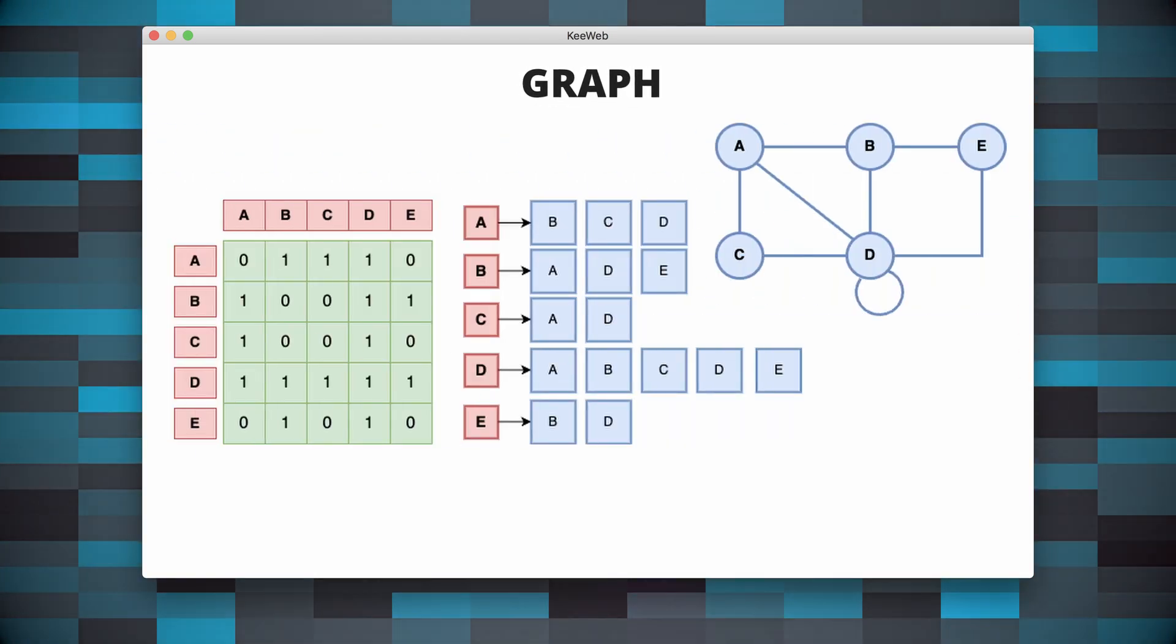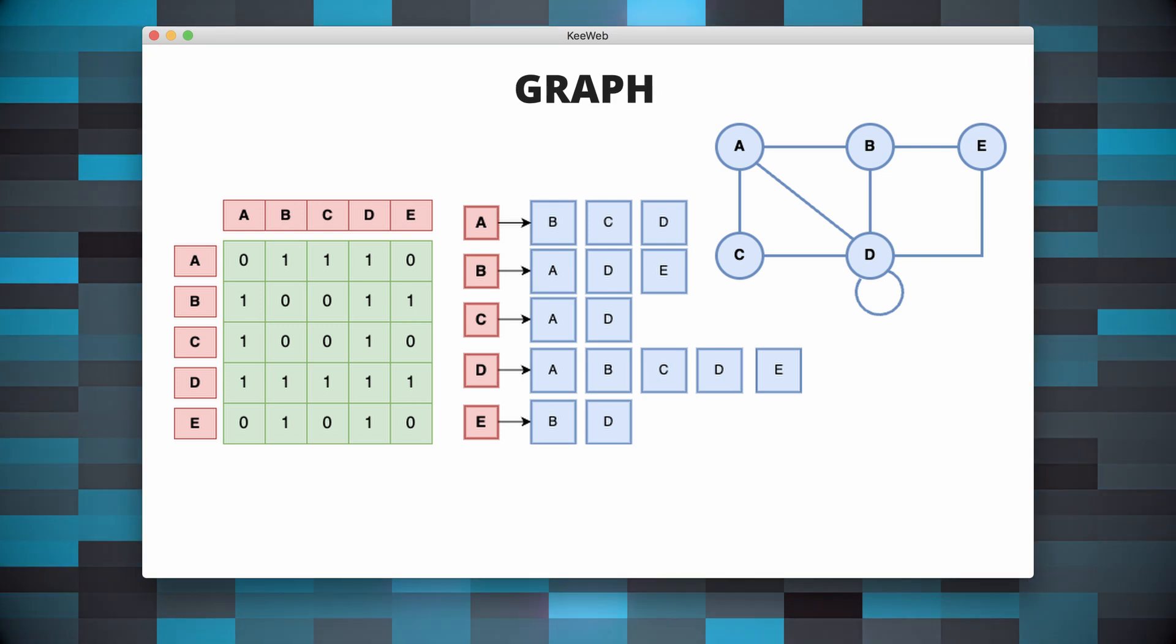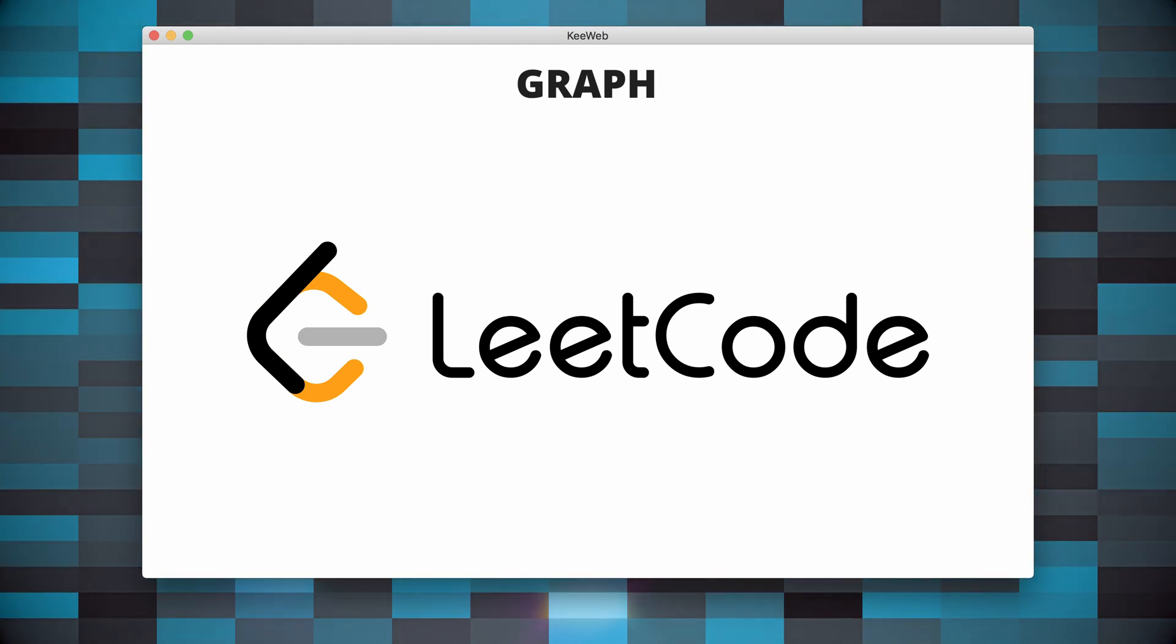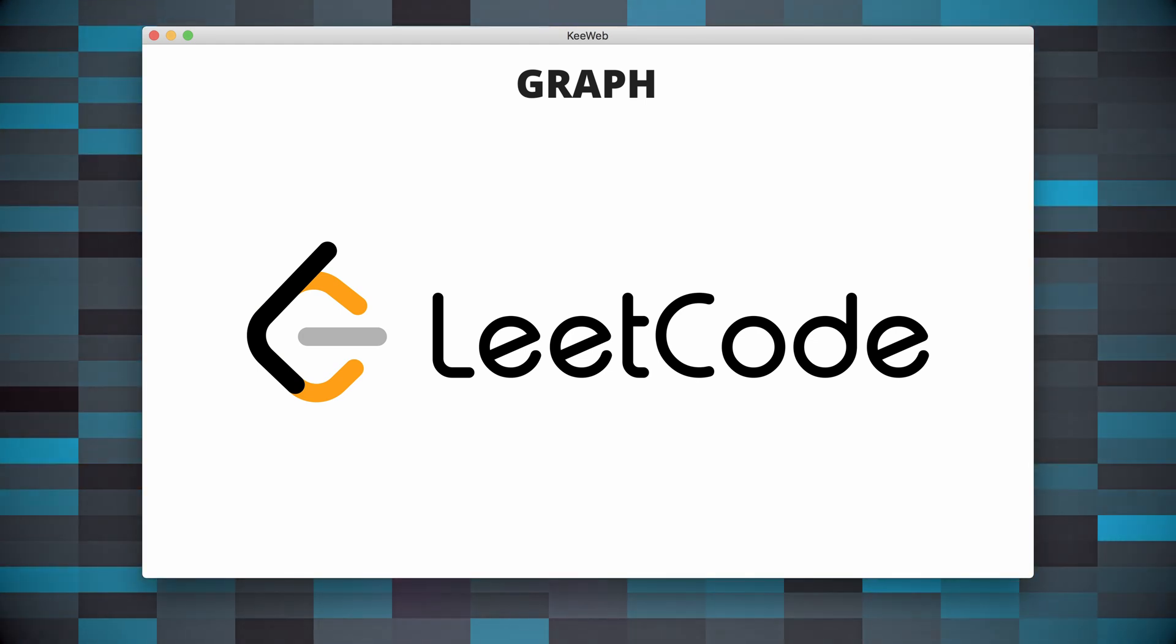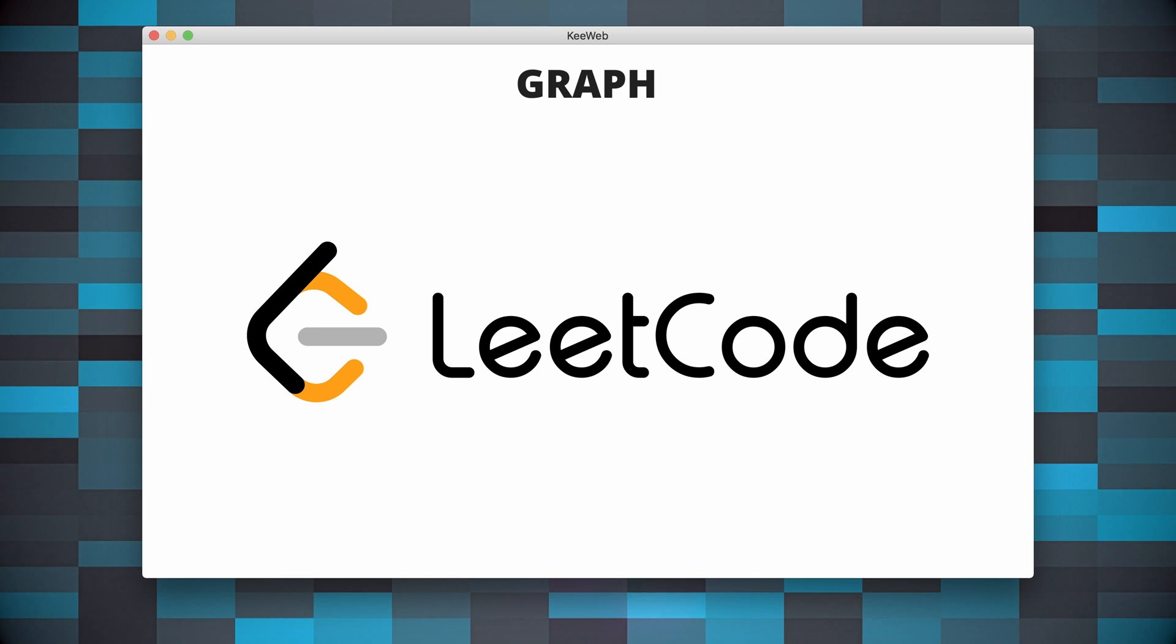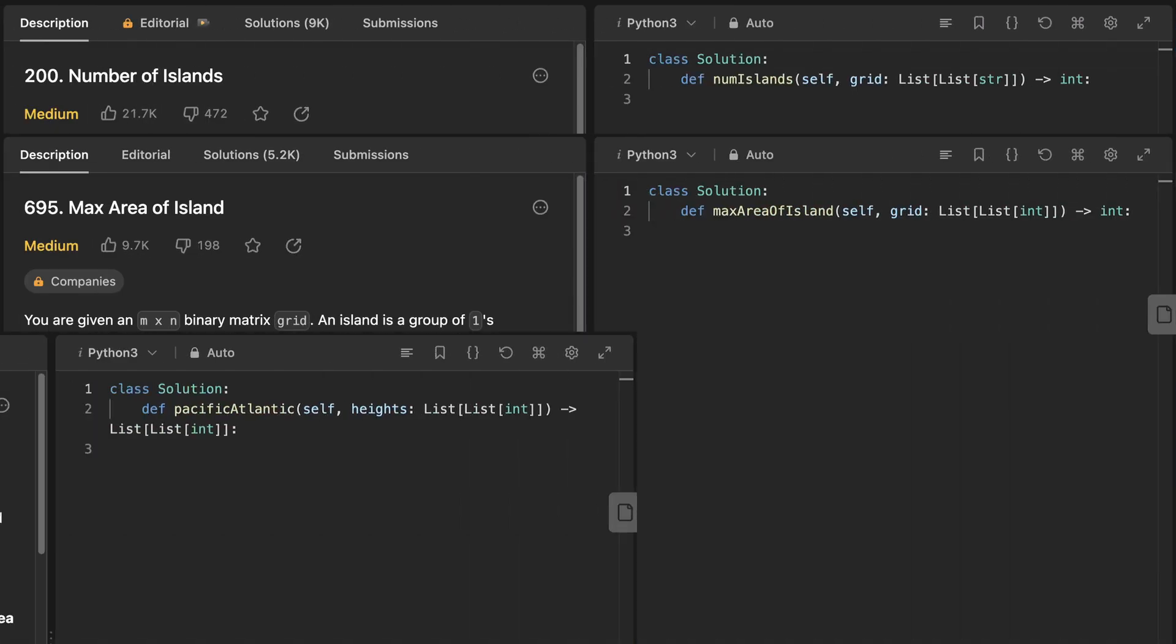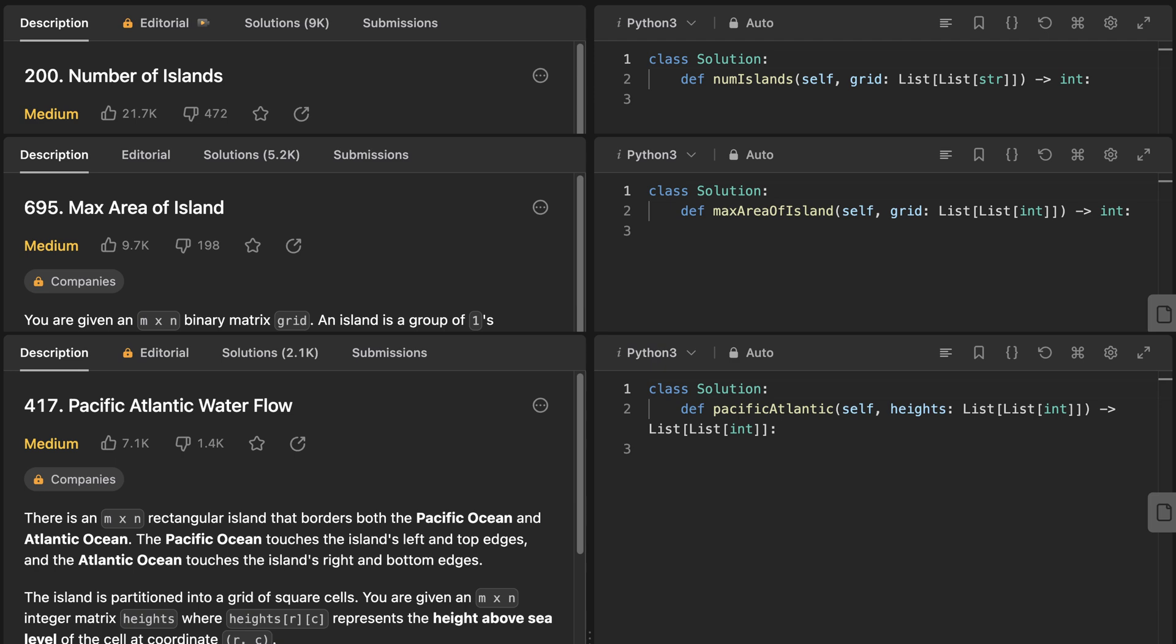I don't want to go further down in detail, as I'm sure there is plenty of great material online. Here are some LeetCode questions that require graph knowledge that will help you understand these better: Number of Islands, Max Area of Island, and Pacific Atlantic Water Flow.